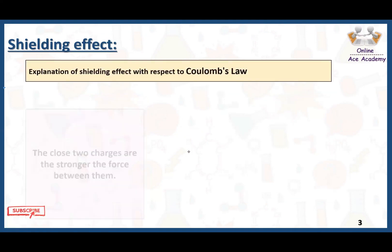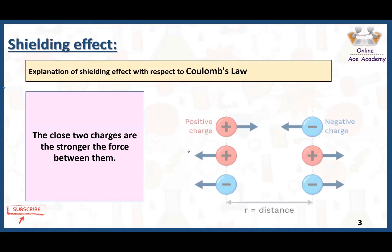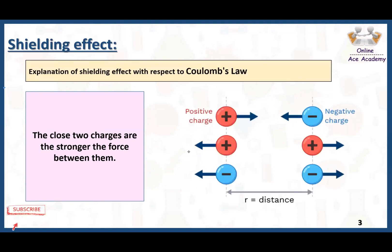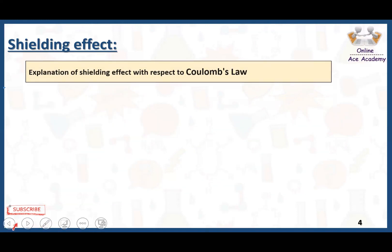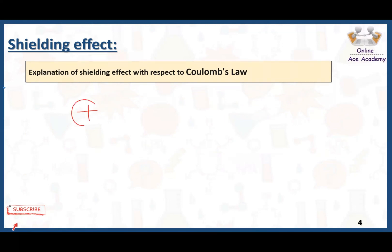As we know, the closer two charges are, the stronger the force between them. According to Coulomb's law, positive and negative charges attract each other, while positive-positive and negative-negative charges repel. For example, if we have the north pole and south pole of a magnet, they attract each other. When they are close, they have more attraction compared to when they are placed farther apart, where they have less attraction.